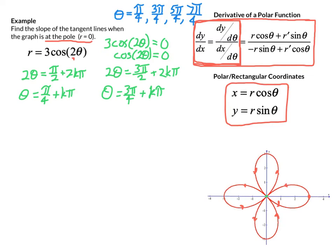If the formula doesn't grab you, you can remember that it comes from the product rule applied to y and x. Confirming that: dy/dθ = r·cosθ + r′·sinθ, and dx/dθ = −r·sinθ + r′·cosθ. So I'm going to define x and y as functions of theta. In this case, x = 3cos(2θ)·cosθ, and y = 3cos(2θ)·sinθ.